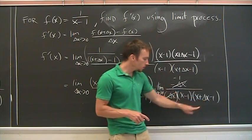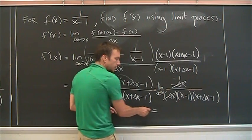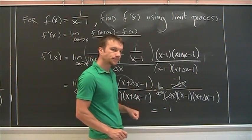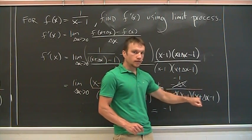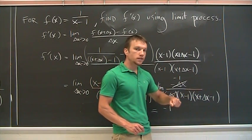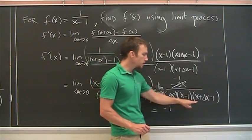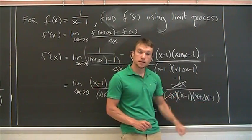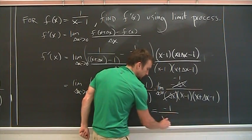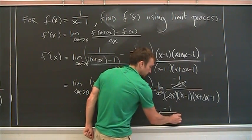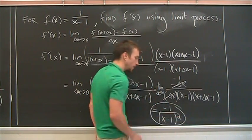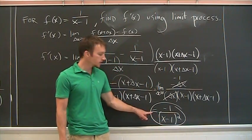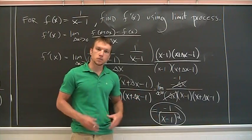So when I plug that in, what do you get? So this is going to be equal to, so take the limit, negative one up top, and then I just plug a zero in here. That's our favorite way to evaluate limits, by just plugging it in. So when I plug that in, I get an x minus one times an x minus one. And there is my derivative, like promised, a function of x, negative one over x minus one squared.